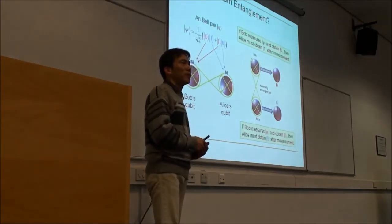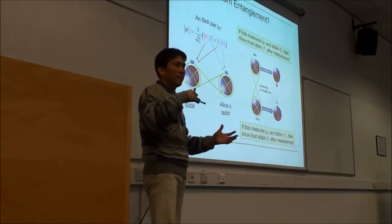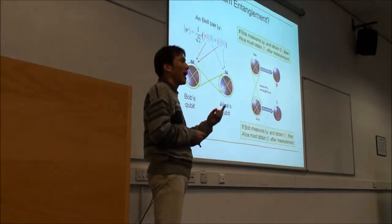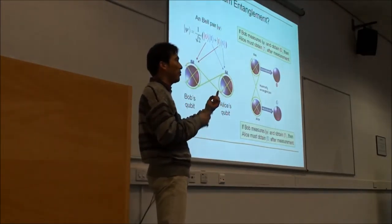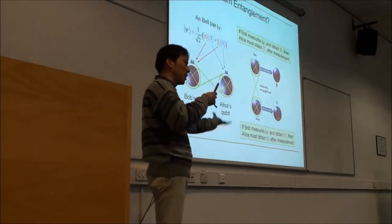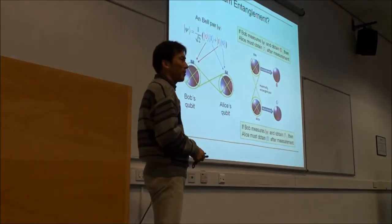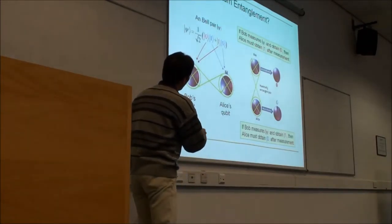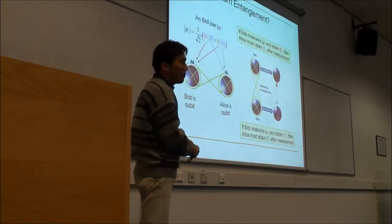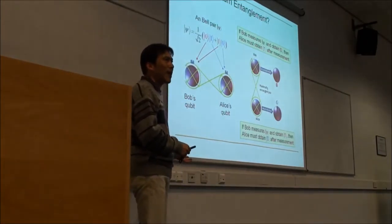Another interesting thing about the quantum state: if you have one single qubit and look at it, it collapses to either 0 or 1. But if you have two qubits, a very interesting phenomenon happens — so-called entanglement.